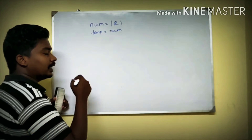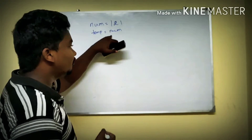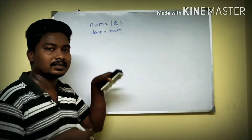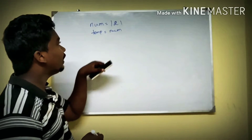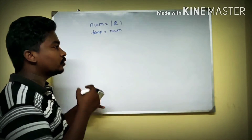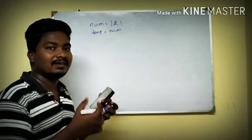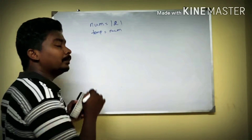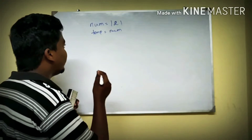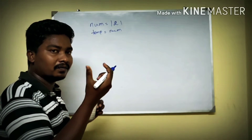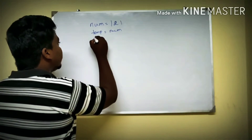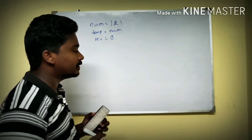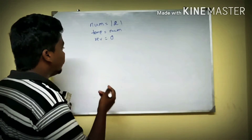First, temp is equal to num1. I want to explain why temp equals num1. The num1 will go through a process — like division and some other operations — so the num1 value will change. That is why we store the original num1 value into temp, so we can compare it later.